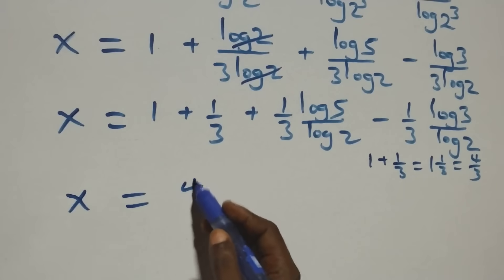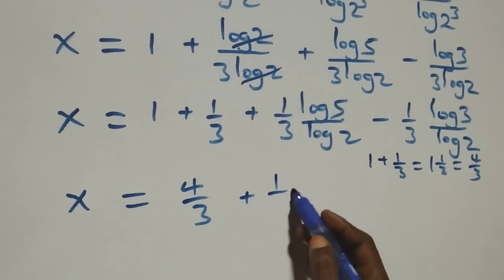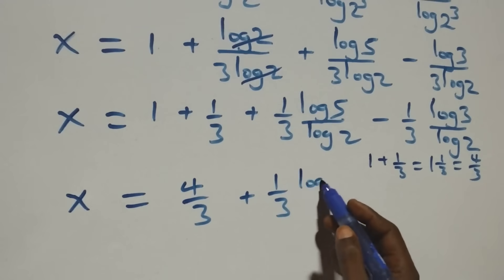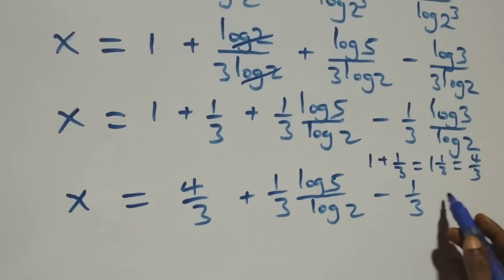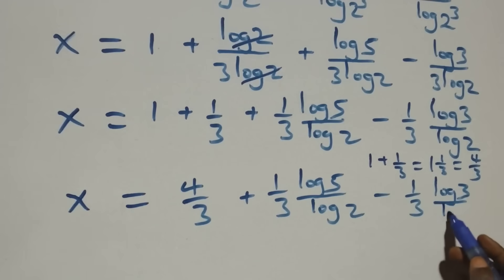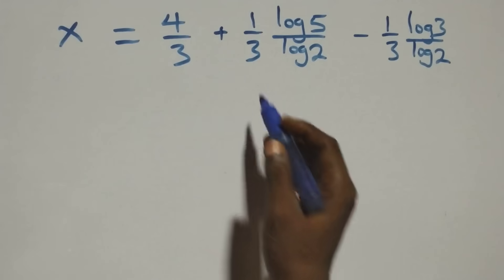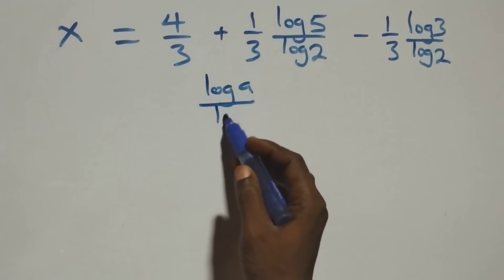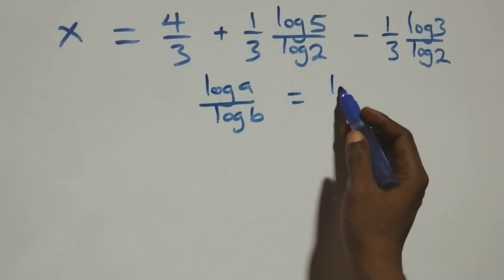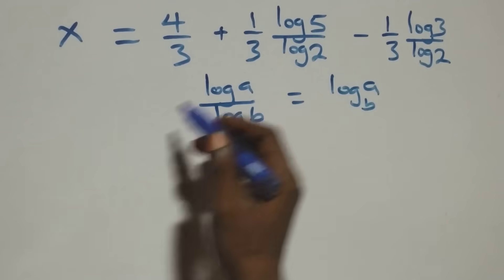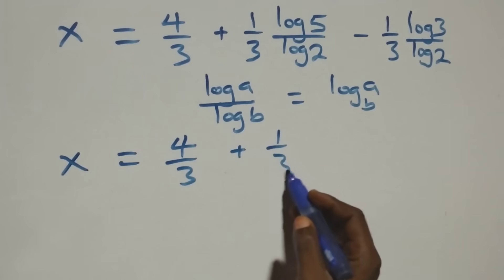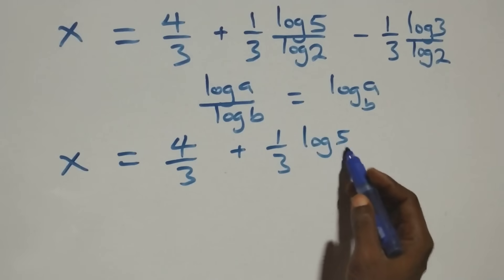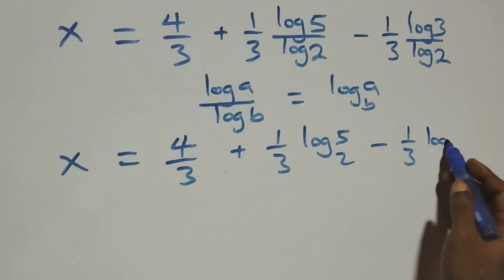That is, we have x equals 4/3 plus (1/3)·(log 5/log 2), minus (1/3)·(log 3/log 2). We apply the change of base formula: log a over log b is the same as log a to base b. So all we have becomes x equals 4/3 plus (1/3)·log₂5 minus (1/3)·log₂3.